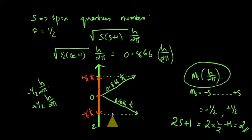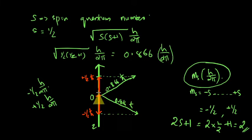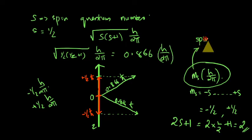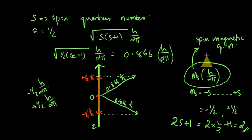The component of the spin angular momentum in a given reference direction is given by ms times h/2π, or ms times ℏ, which is restricted to 2s+1 values. In the case of an electron, 2s+1 equals 2×(1/2)+1 = 2. That is why we get only two orientations. Corresponding to these two orientations, we have two ms values: plus one-half and minus one-half. This ms determines the component of the spin angular momentum in a given reference direction, and is called the spin magnetic quantum number.